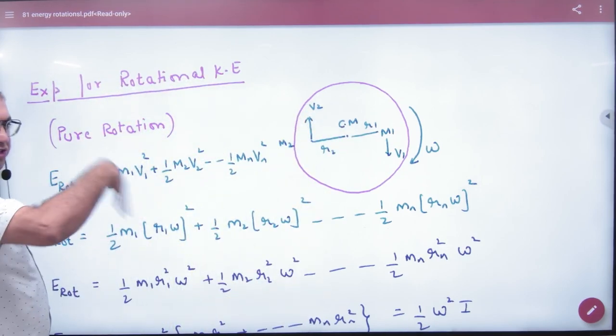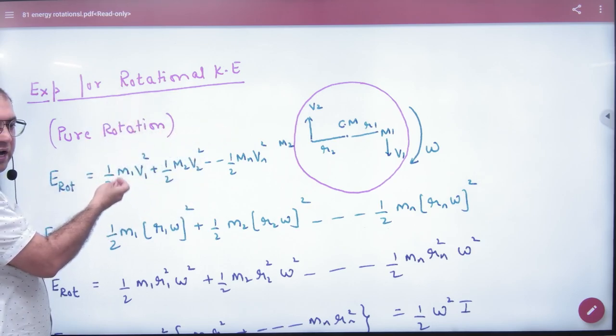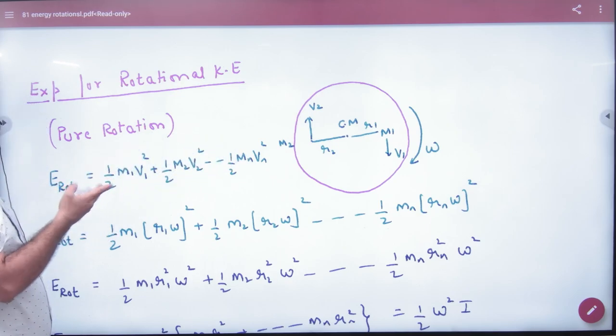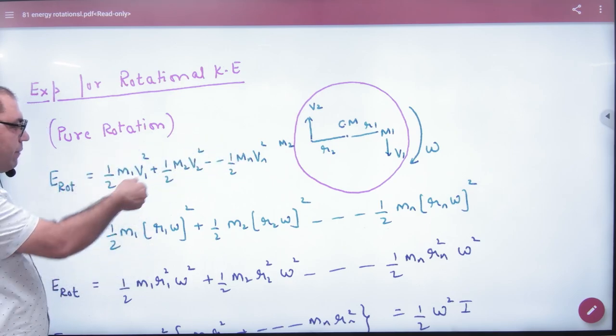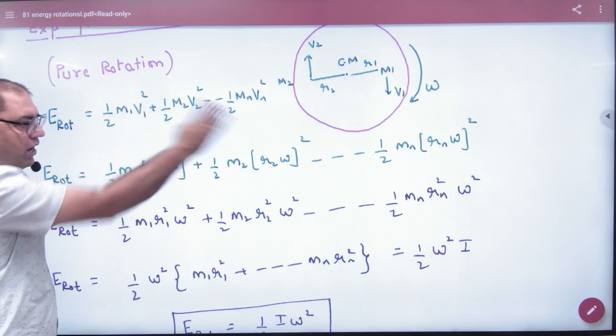So, in this case, when it is pure rotation, a big body going around, what is the first particle energy? Half m1 v1 squared, half m2 v2 squared, half mn vn squared. And I can put v1 value here: r1 omega, v2: r2 omega, rn omega.